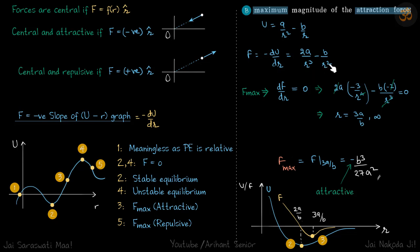F we can write as minus dU by dR into R cap. I have not written R cap here initially, but actually let me write that so there's no confusion. This is the total force, which is radial, of course.